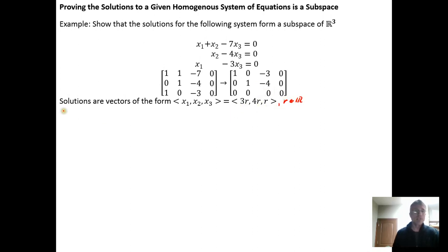So we'll say let C be a scalar, so a real number. And we'll let 3x, 4x, x be an element from the set of vectors that look like 3r, 4r, r, where r is a real number. So just grab an arbitrary member from this set, and then do the scalar multiplication.